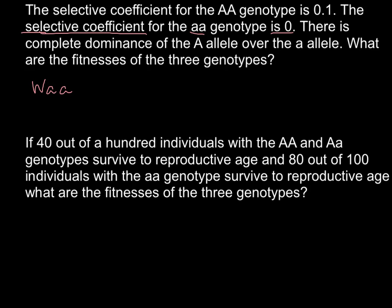We can choose only between 0 and 1 for the selective coefficient, and 1 is the maximum. When the selective coefficient is 1, that means 100% of the genotype would die before it can reproduce. So the best survival results here belong to the homozygous recessive. When the selective coefficient is 0, the fitness is equal to 1.